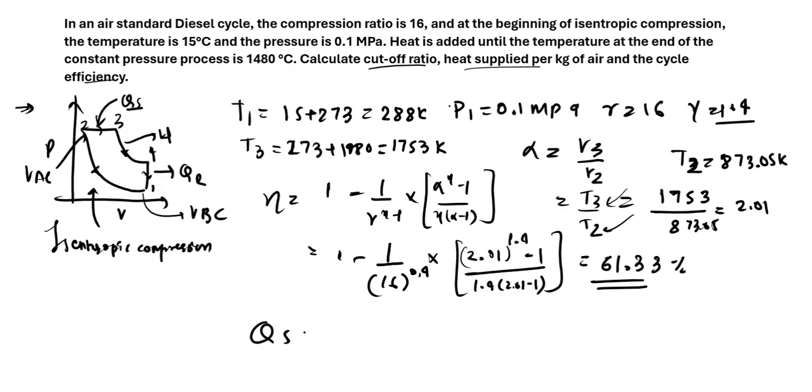So next thing we have to find the heat supplied. For a constant pressure process, heat supplied can be written as Cp delta T per unit kg of gas. If you take the value of Cp in kJ per kg Kelvin, then you can write it as Cp delta T. You have Cp as 1.005 for air, and delta T is T3 minus T2. So if you calculate this, you will get it as 884.34 kJ per kg as the heat supplied.